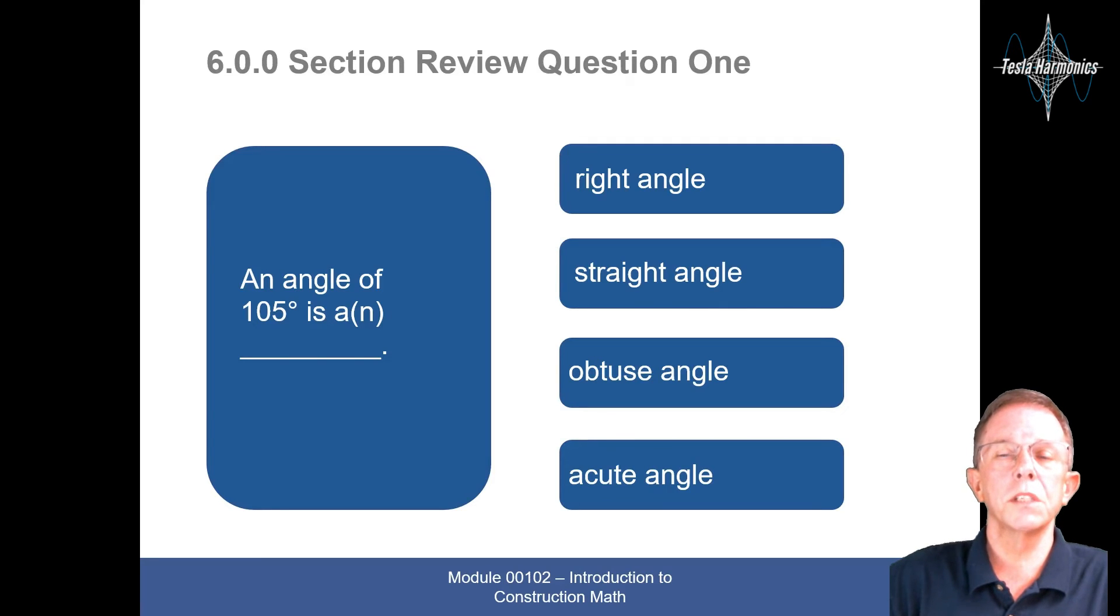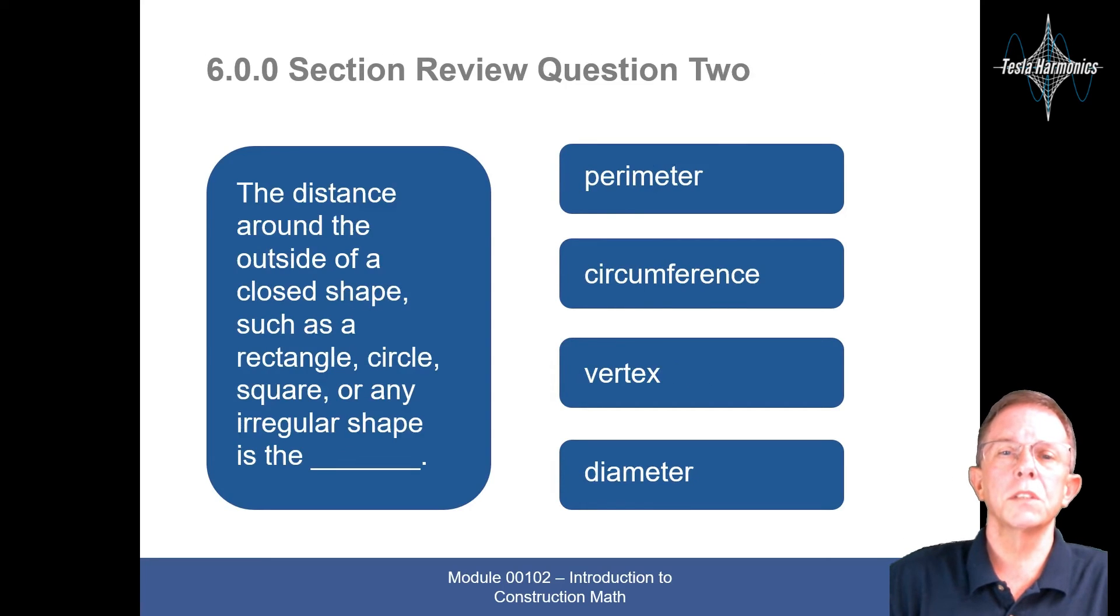And here are some review questions for this section. An angle of 105 degrees is right angle, straight angle, obtuse angle, or acute angle. That would be an obtuse angle.